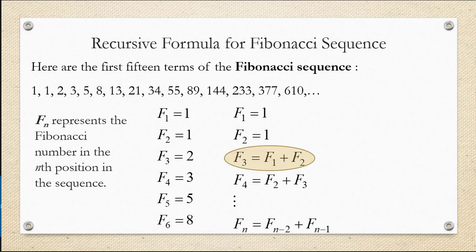Starting with the third term, F sub 3, each term is a sum of the previous two terms. So F sub 3 is F sub 1 plus F sub 2. F sub 4 is F sub 2 plus F sub 3, and in general, F sub n is going to be the sum of the previous two terms as well.